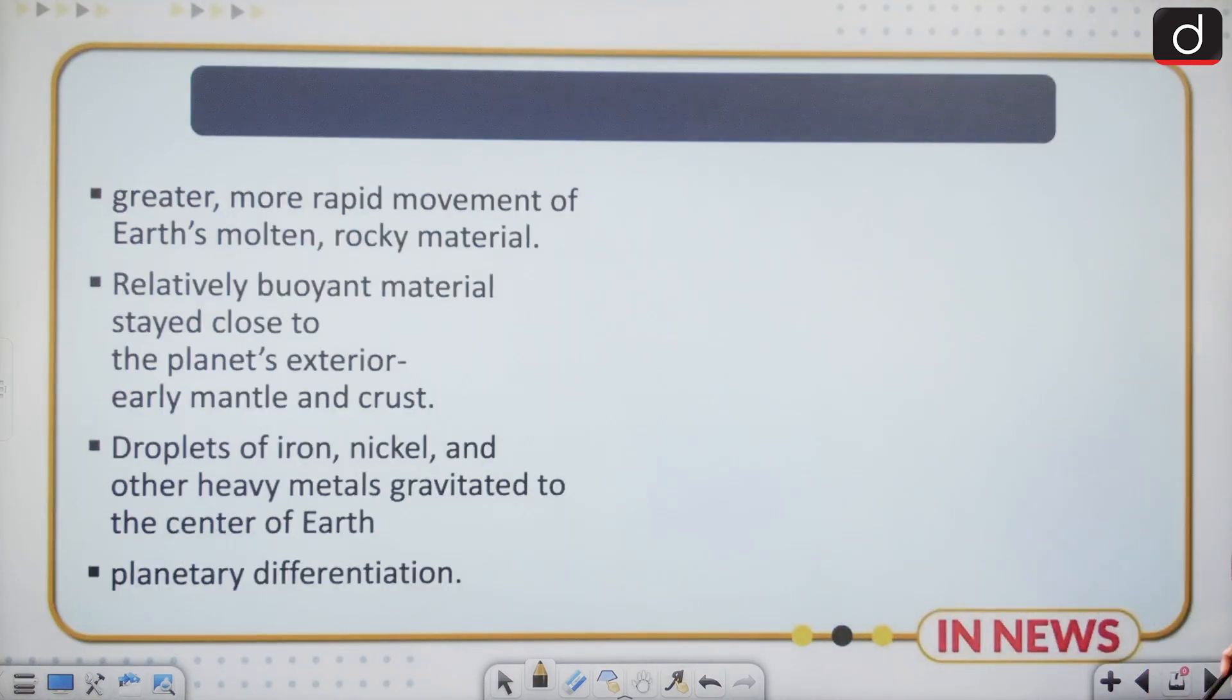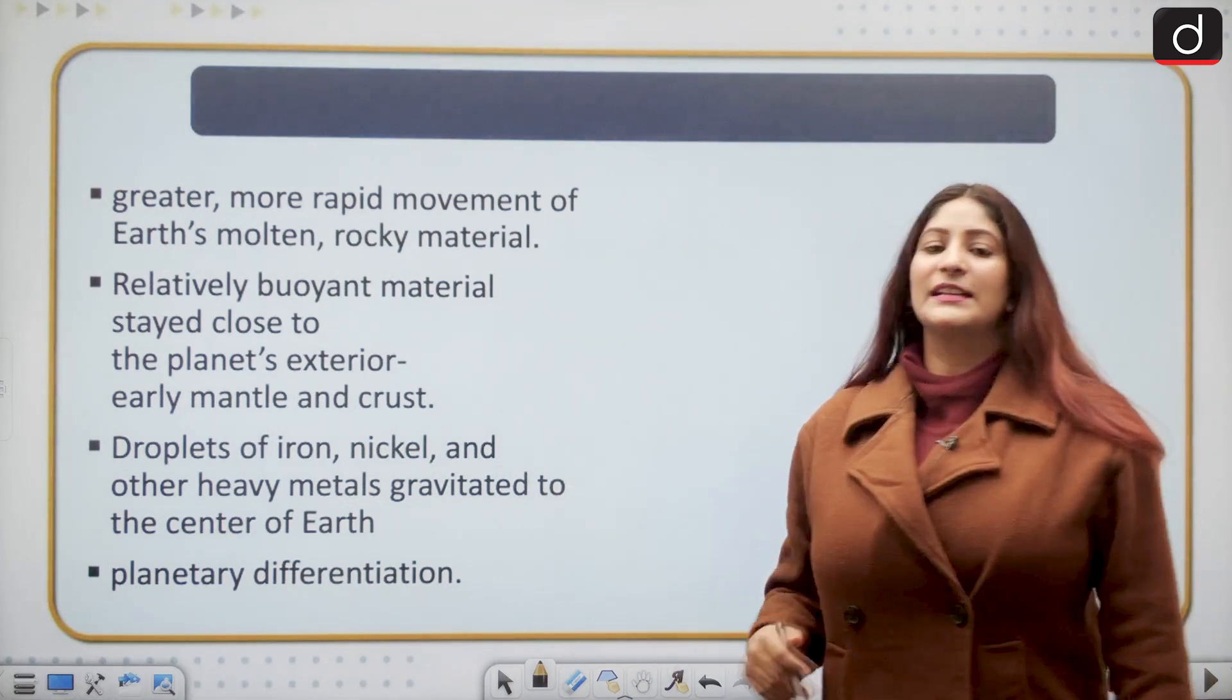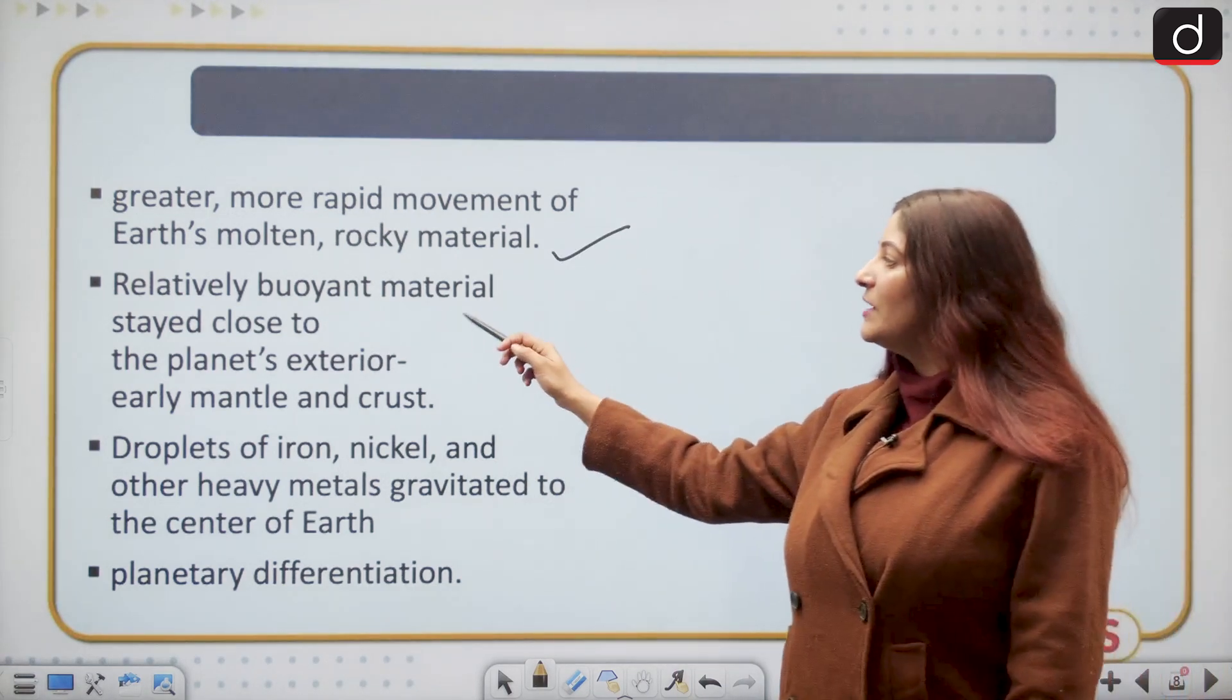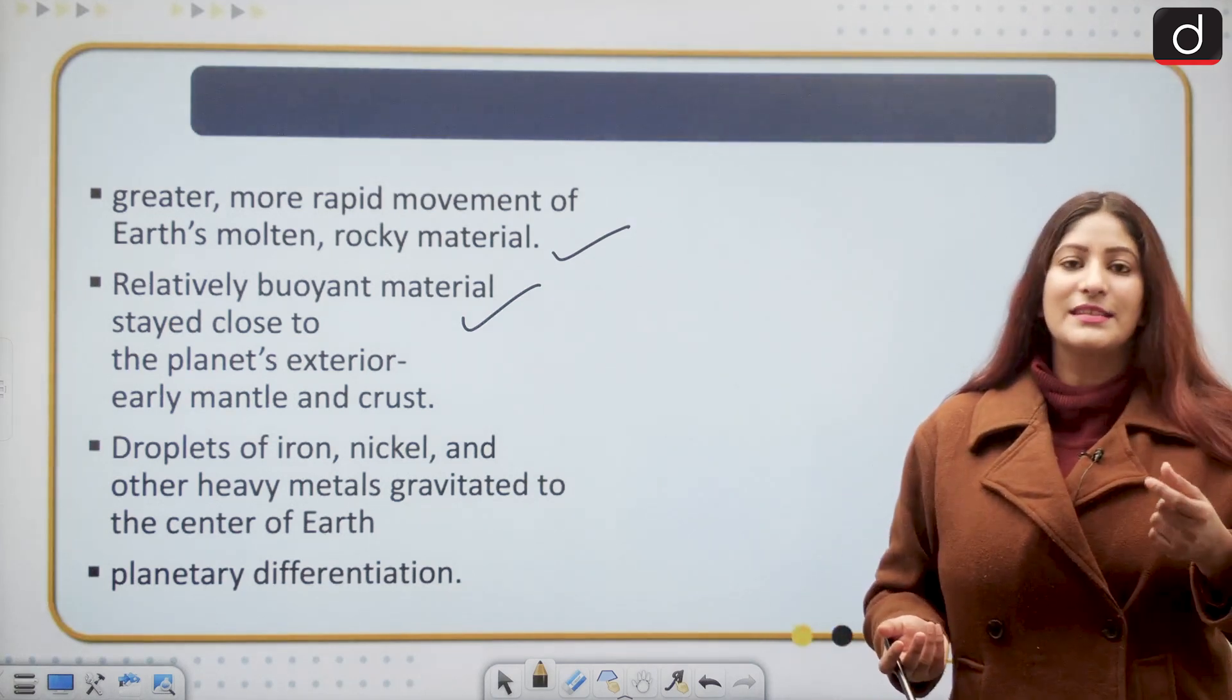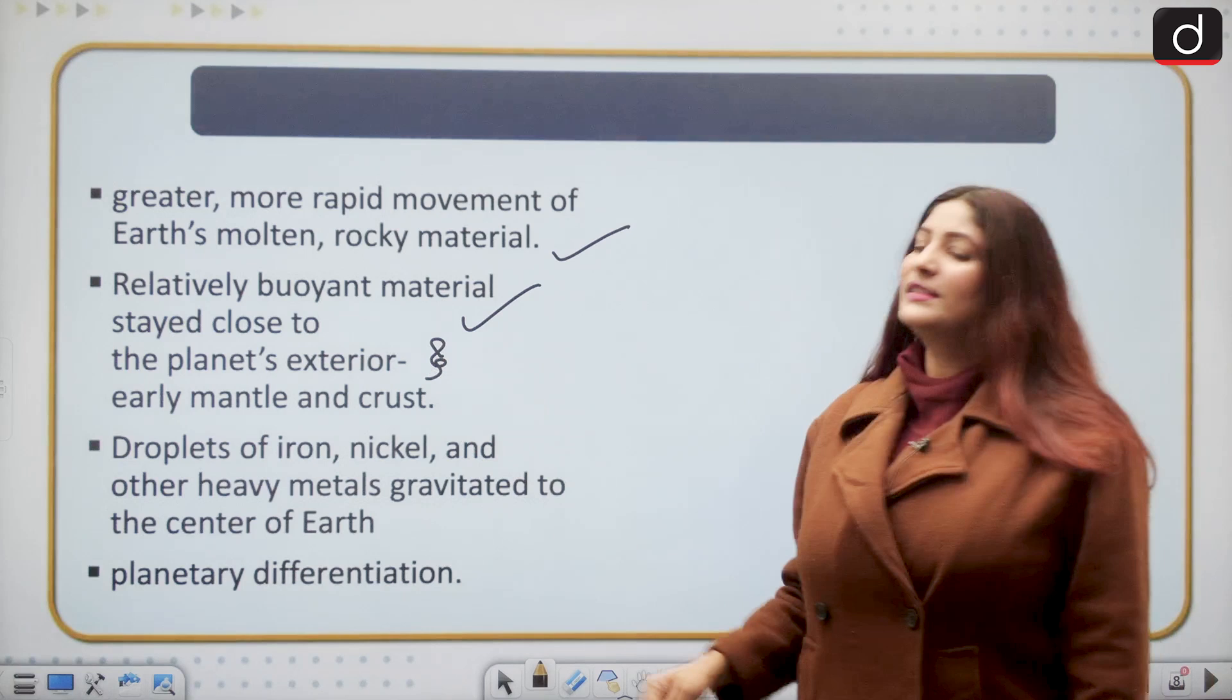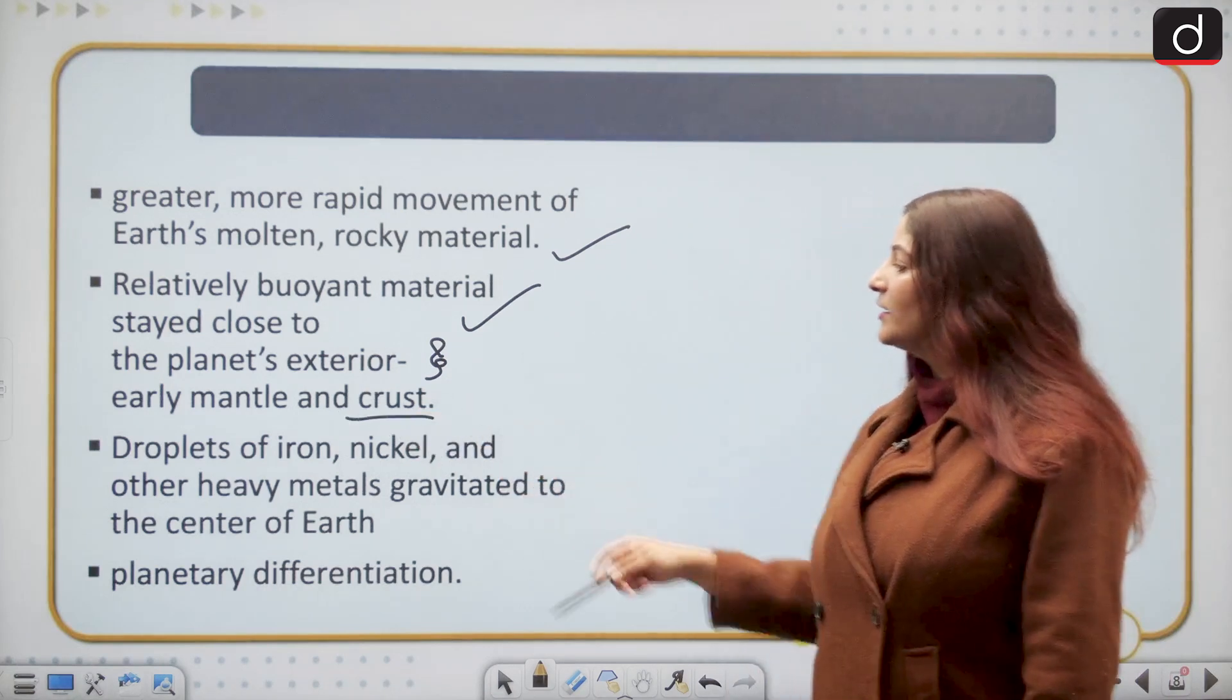The core is made up of nickel and iron and that is why it is known as NiFe. Greater, more rapid movement of earth's molten rocky materials started to take place. The relatively buoyant, lighter material stayed close to the planet's exterior, comprised of oxygen and other important elements, and that formed the earth's mantle and crust.